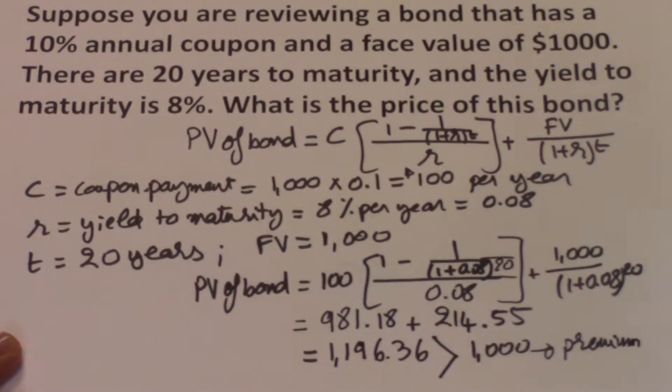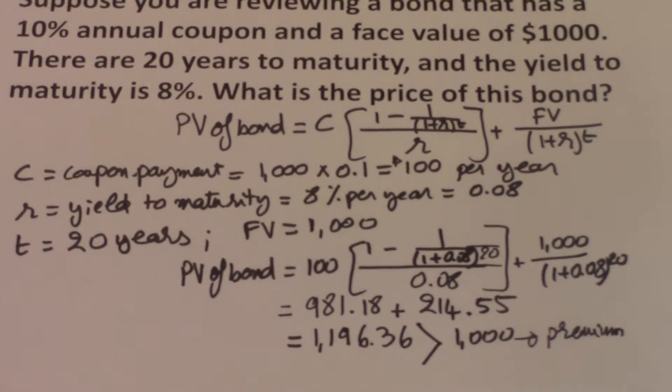And the intuition behind this is we can get it by comparing the coupon rates that this bond pays compared to the yield to maturity. This bond pays 10%, a 10% annual coupon, which means that every year the holder of the bond gets $100.